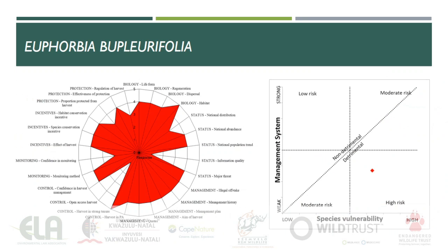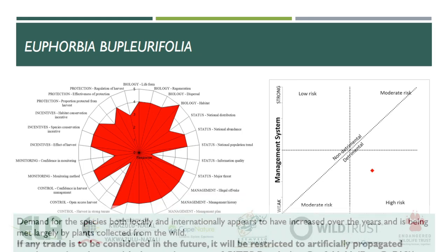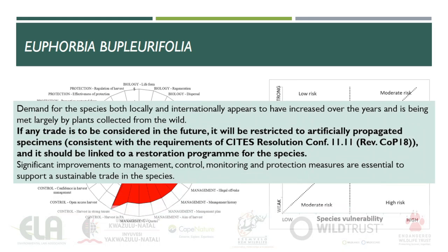Outcomes of the NDF indicate that the species is at high risk of unsustainable use, which would render the trade detrimental. The demand for the species has increased over the years and is being met largely by plants collected from the wild. Trade can therefore not be allowed to continue. If any trade is to be considered in the future, it should be restricted to artificially propagated specimens and linked to a restoration program for the species.